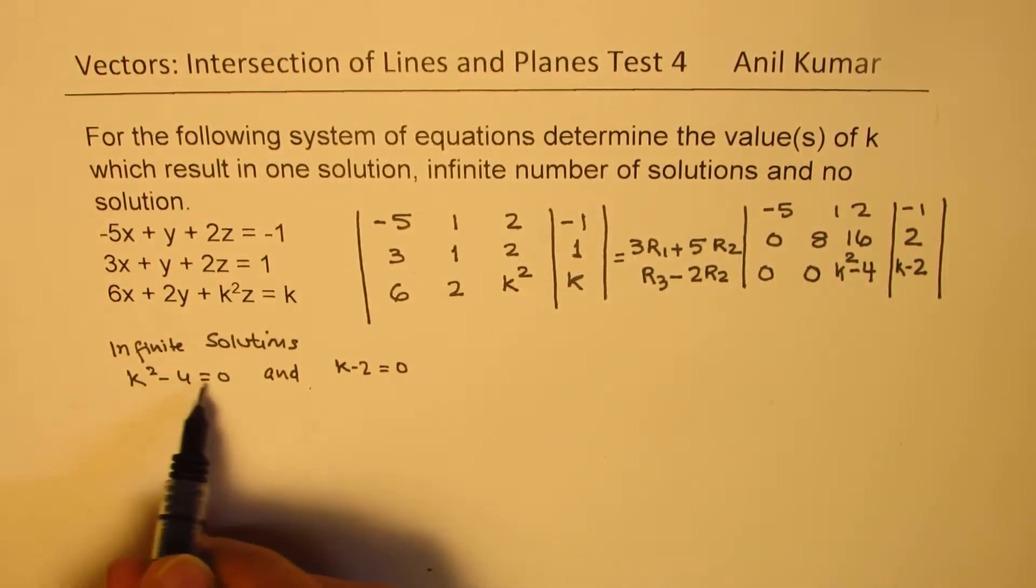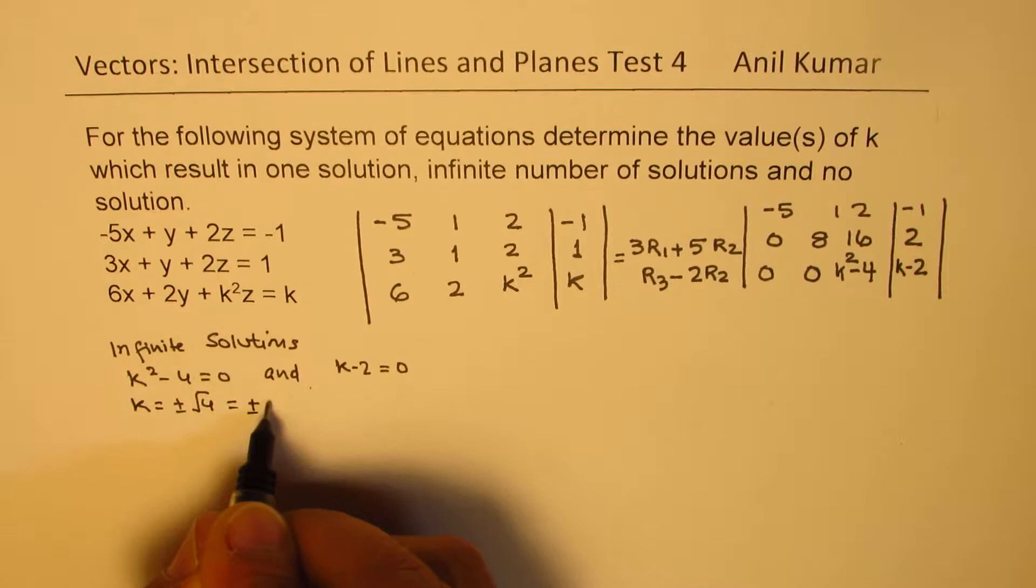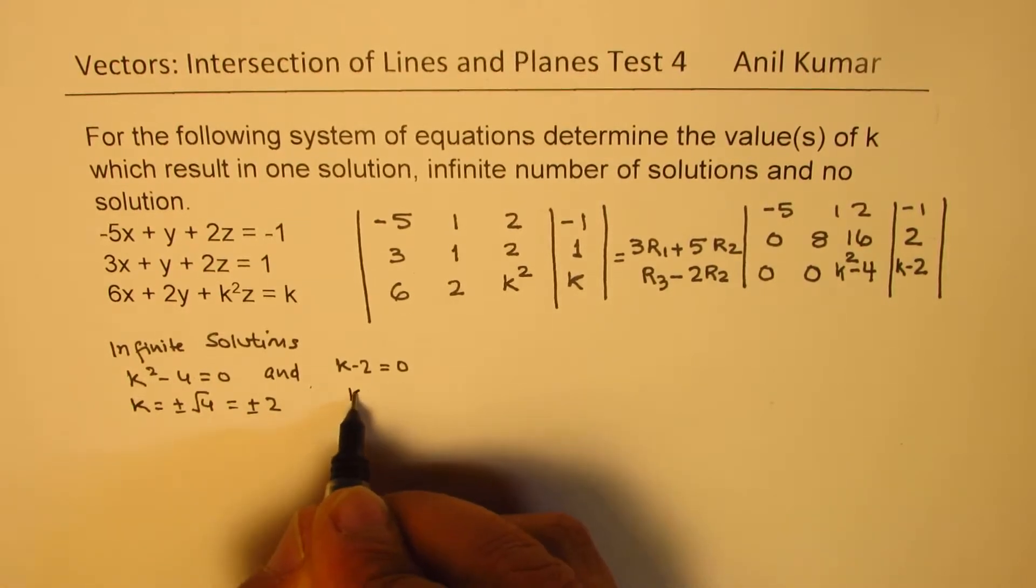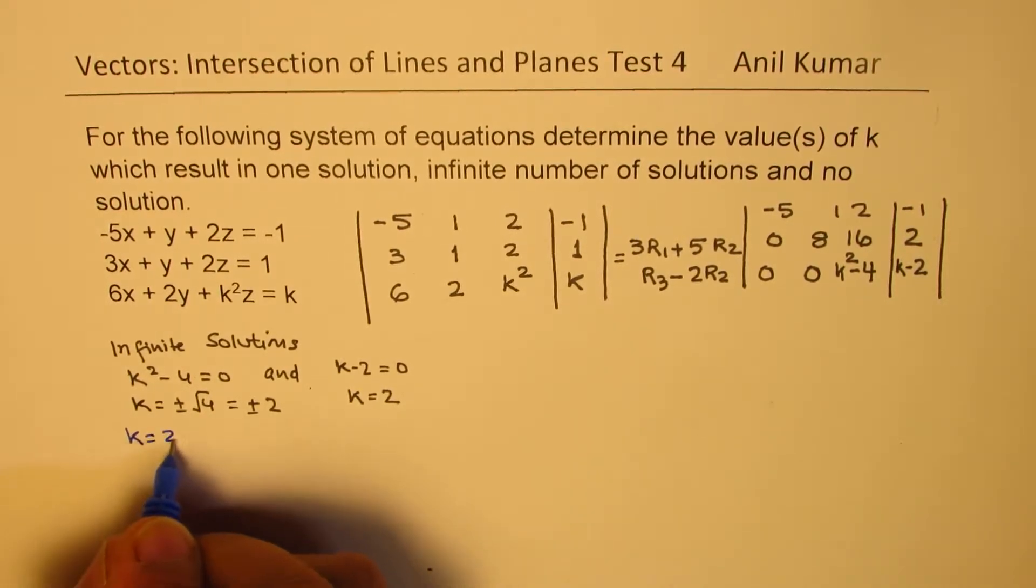So if k squared minus 4 is 0, then k is equal to plus minus square root of 4, which gives us plus minus 2. And here, we get the condition k equals to 2. So as you can see, k equals to 2 means we get infinite solutions.